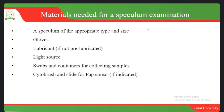Materials needed for a speculum examination include a speculum of appropriate type and size, gloves, and a lubricant — you must not insert the speculum without lubrication. Pre-lubricate the speculum before insertion. A light source is also necessary for inspection, as you need enough light to observe the surface and structures of the genitalia and to carry out your procedure effectively.